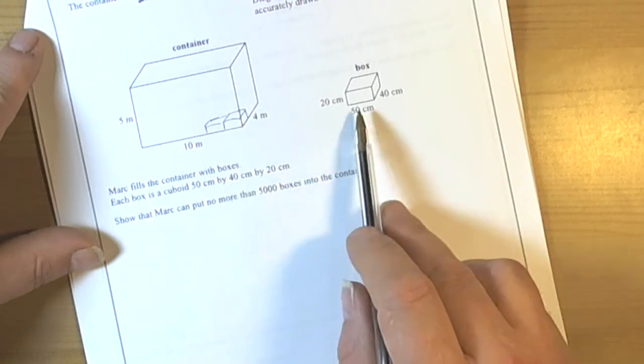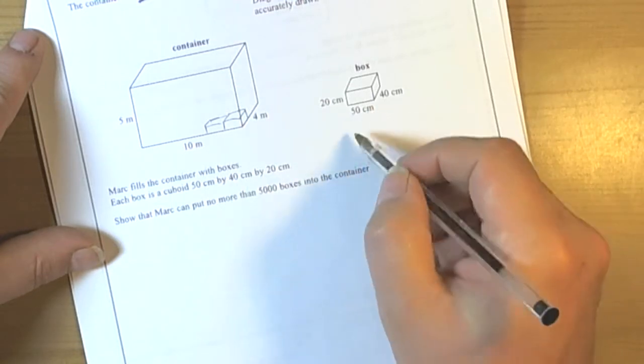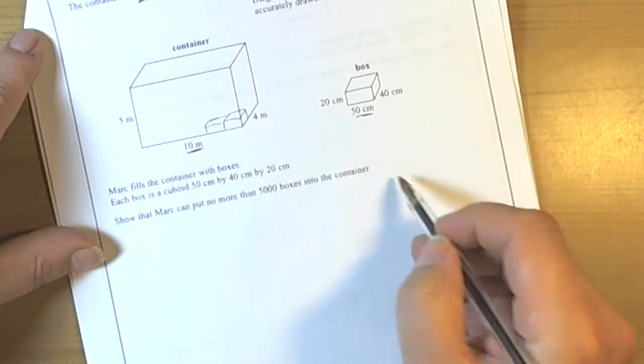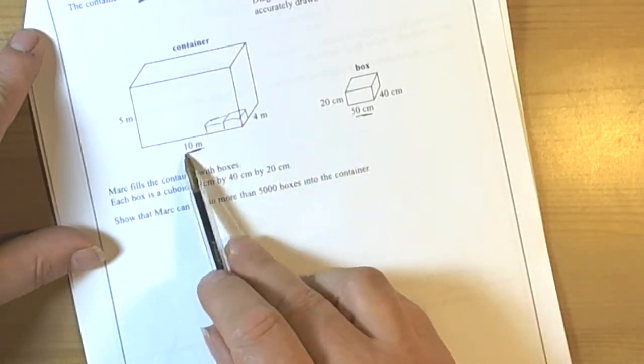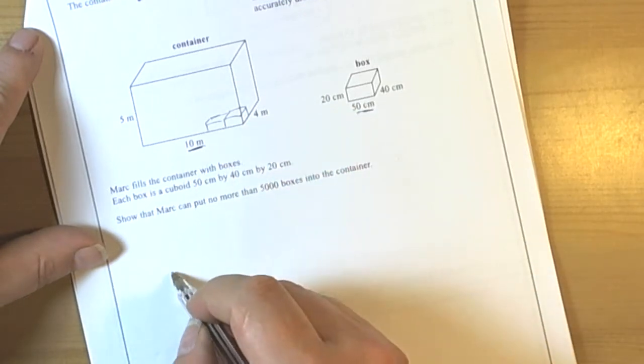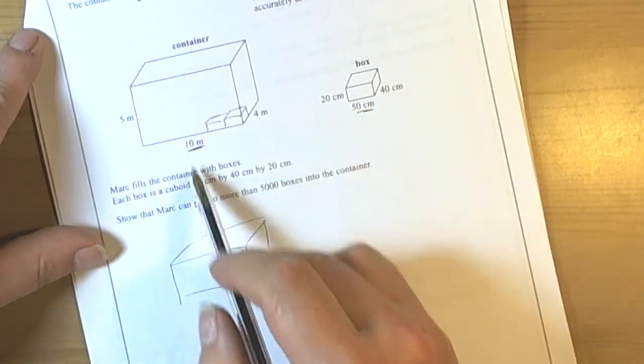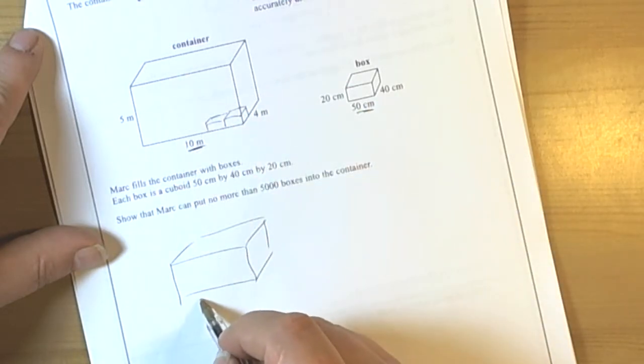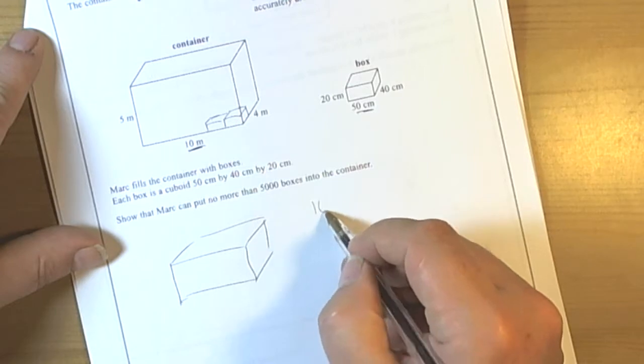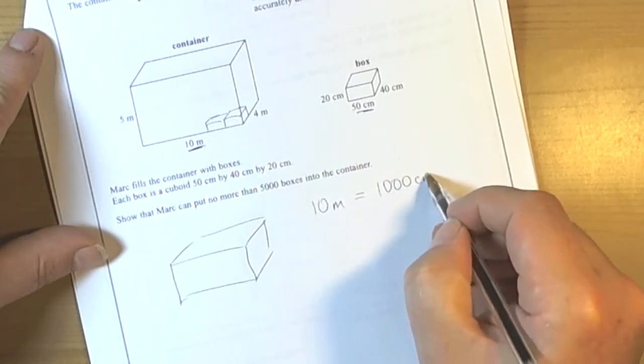Each box is in centimeters, but we've got centimeters here and meters here. The first thing we've got to remember is if we've got two different units, usually the easiest thing to do is to convert. So if we look at the container, we change meters into centimeters. Ten meters is going to be one thousand centimeters.